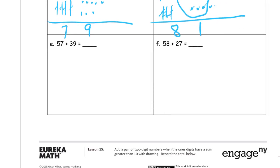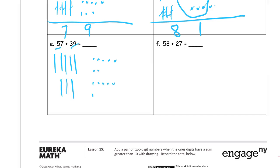Fifty-seven plus thirty-nine. Here I need one, two, three, four, five tens, and one, two, three, four, five, six, seven ones. For thirty-nine, I need one, two, three tens and one, two, three, four, five, six, seven, eight, nine ones.